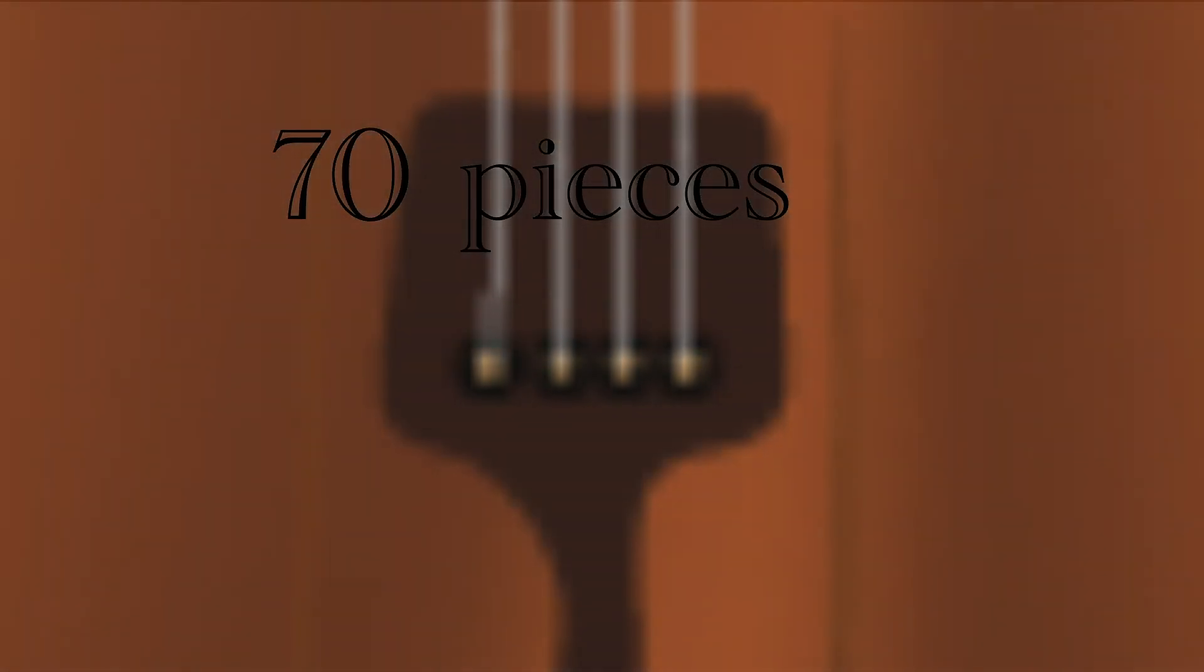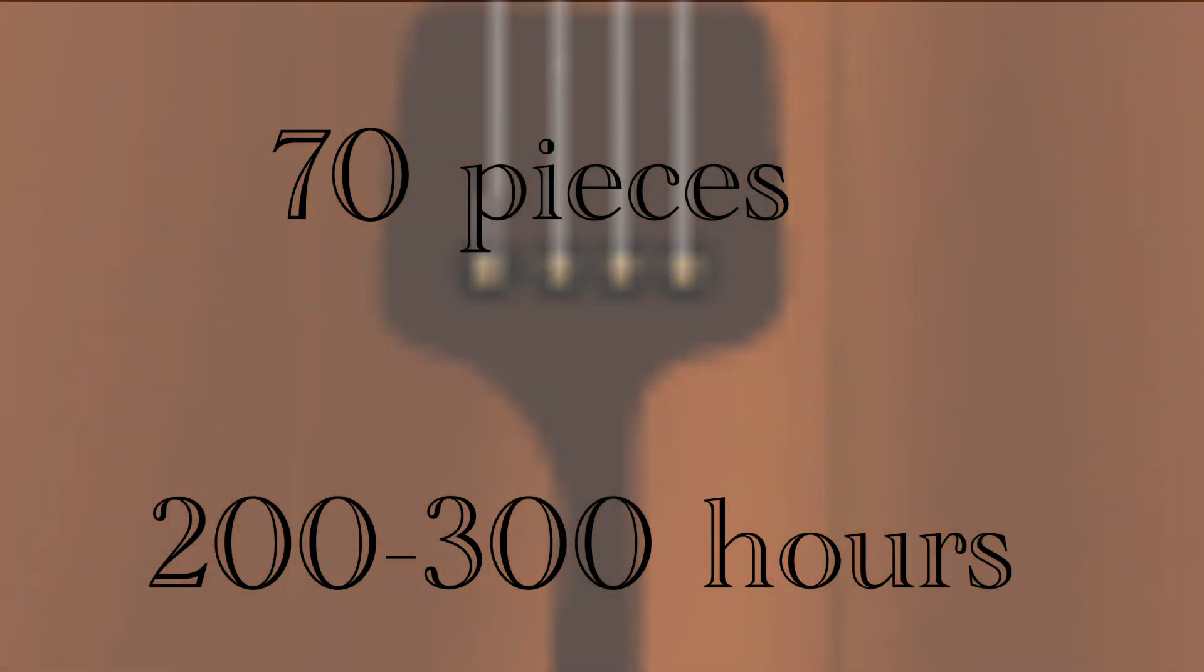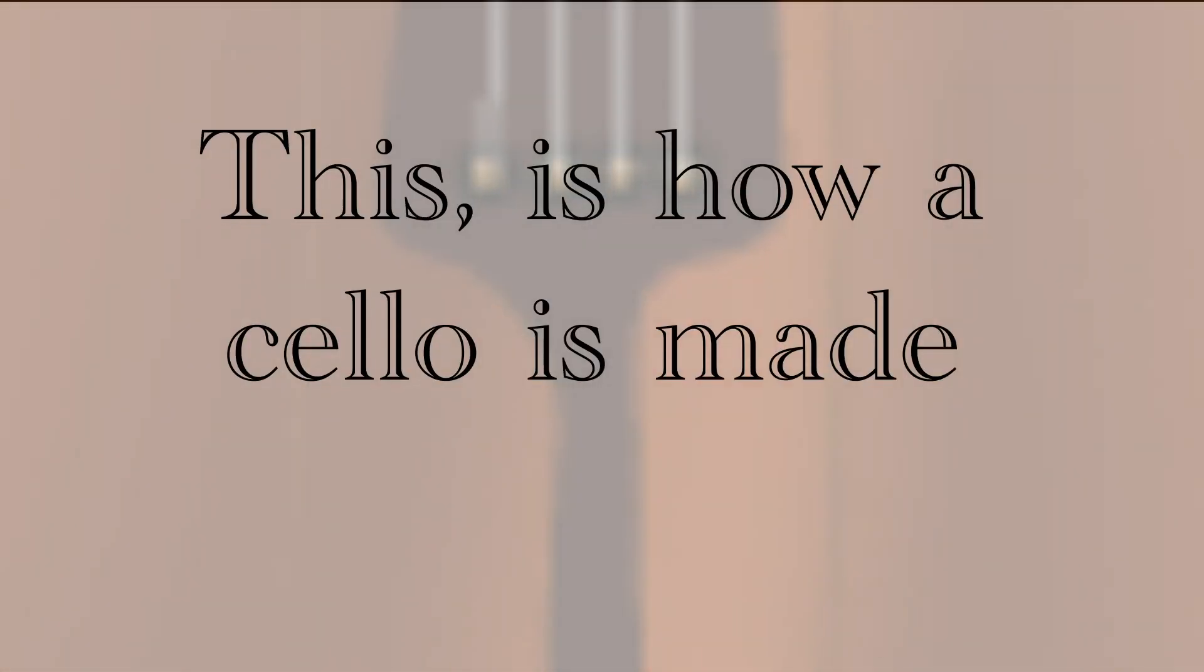Altogether, the cello consists of 70 pieces and takes 200 to 300 hours just to finish a single cello. Every country builds theirs differently, but overall, this is how a cello is made.